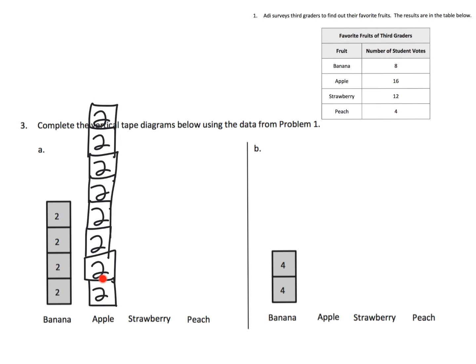Alright, so strawberry. We know we need 12 students. So that's 2, 4, 6, 8, 10, 12. So there is our 12 students who liked strawberry.